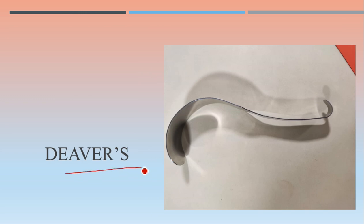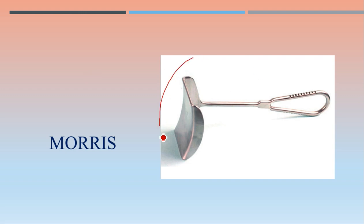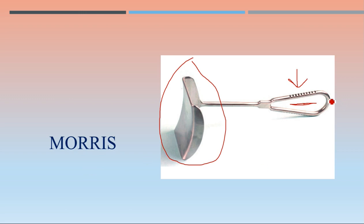Then the Doyen retractor, very commonly used during abdominal surgeries — you hold it from the handle and this portion goes inside the cavity. Morris retractor: this portion goes inside the abdominal cavity and this is the handle to hold. It is hollow to make it lightweight. Another variant of Morris retractor has two blades on each side, but the commonly seen version has one blade.